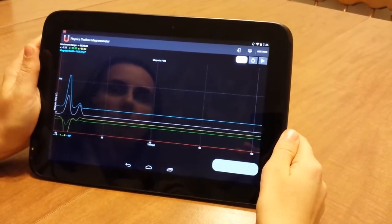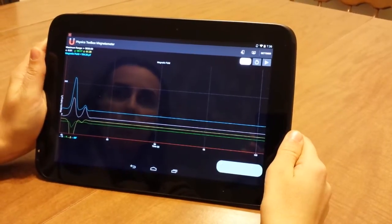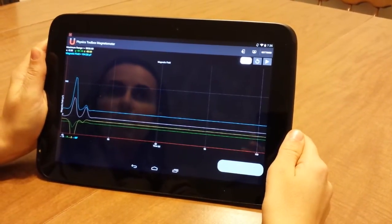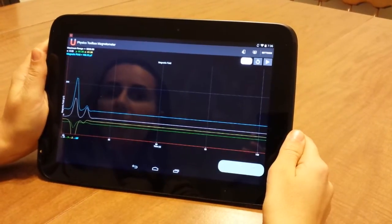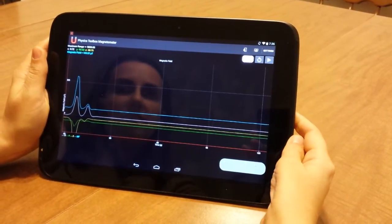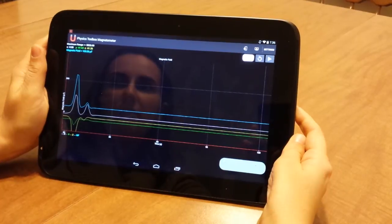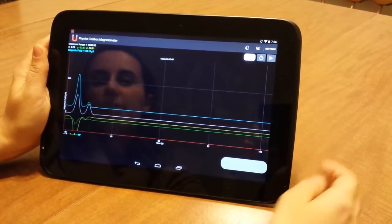And I'm able to take that data, put it into any kind of a data analysis program like Excel or Google Spreadsheets, and do whatever kind of analysis I'd like to do with it. So, there you have it, that's Physics Toolbox Magnetometer.